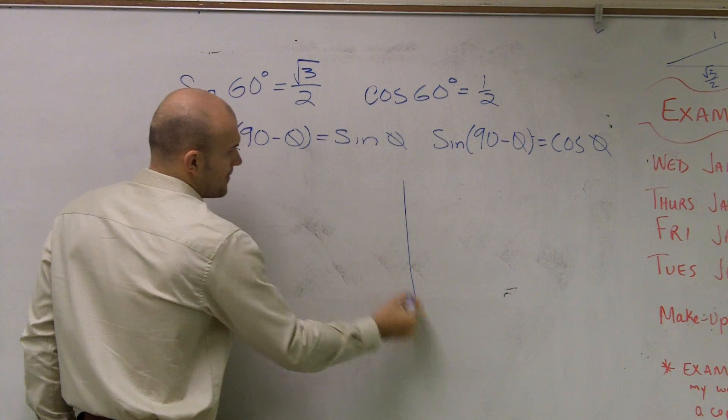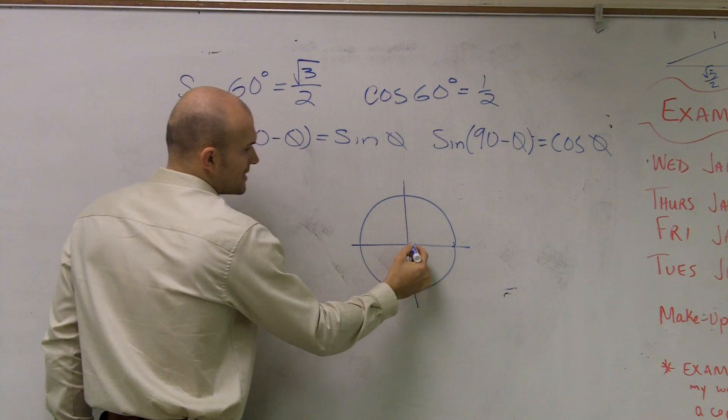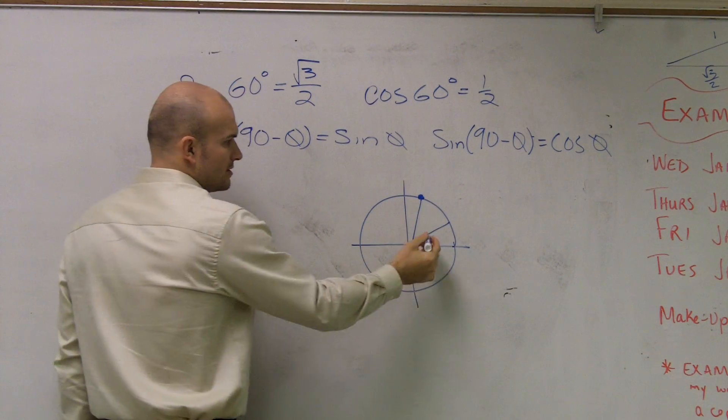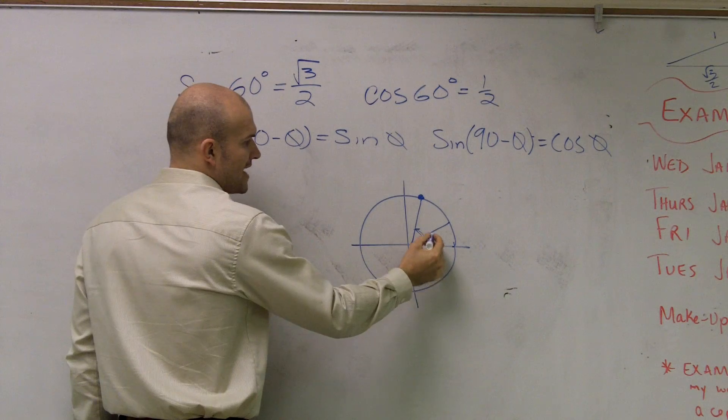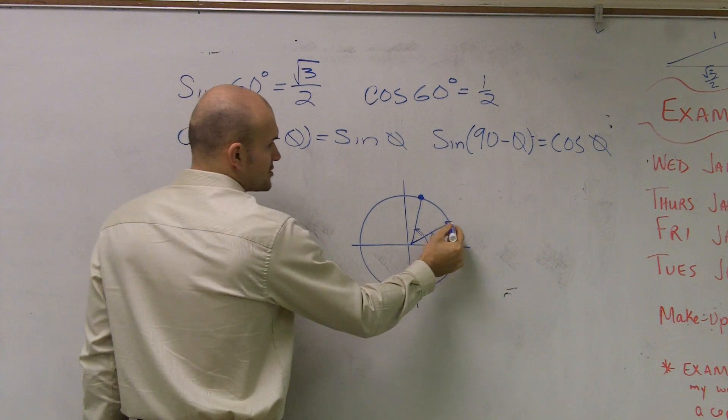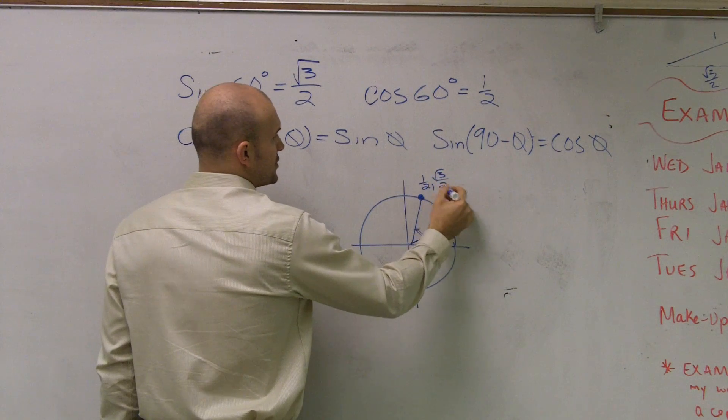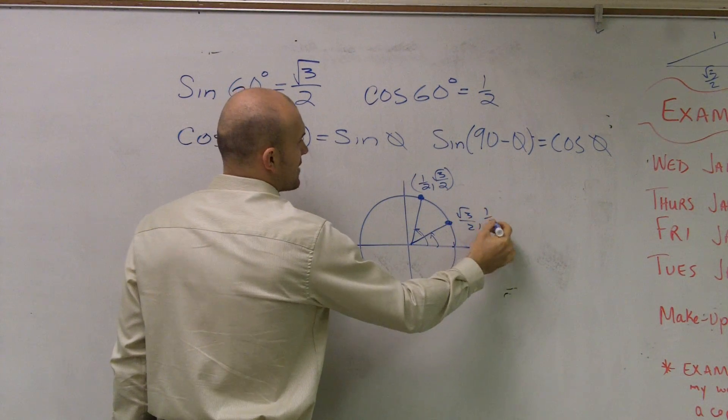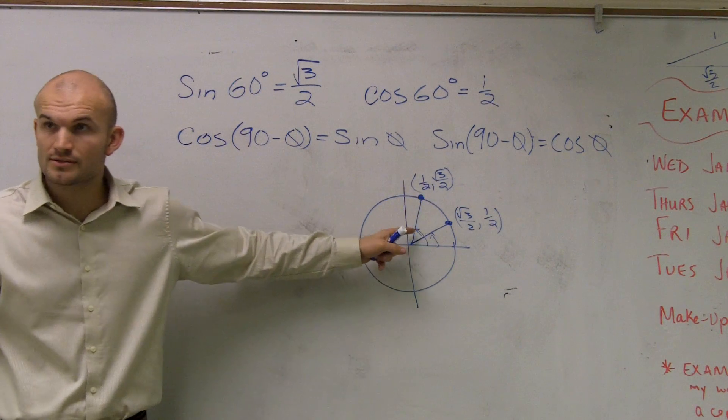If you remember, you look at a unit circle. And let's see. This one is what we say for cosine. That's 60 degrees, right? And that's 30 degrees. So if you guys remember, this point was 1 half, radical 3 over 2. This point is radical 3 over 2 comma 1 half. Right? On your unit circle. You guys remember those? OK.